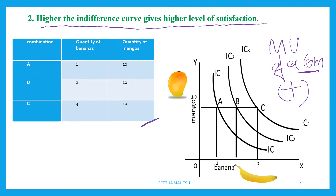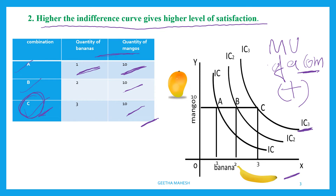Let us understand this with the help of a table and diagram. In the table, there are three combinations which include the quantity of bananas and mangoes. The first combination is one banana and ten mangoes. If we increase the number of bananas while keeping mangoes constant, combination C will give a higher level of satisfaction as it lies on a higher indifference curve, IC3, as you can see in the diagram.